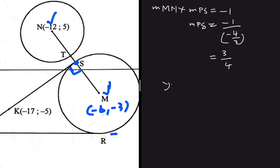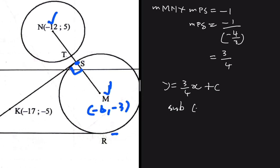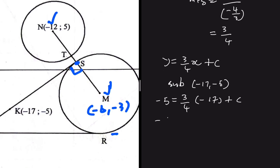To find c, we substitute point K(−17, −5) which lies on line PS: −5 = (3/4)(−17) + c, giving −5 = −51/4 + c. Taking −51/4 to the other side: c = −5 + 51/4 = 31/4.